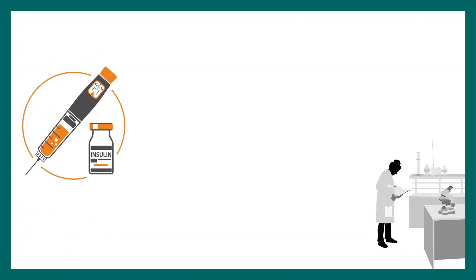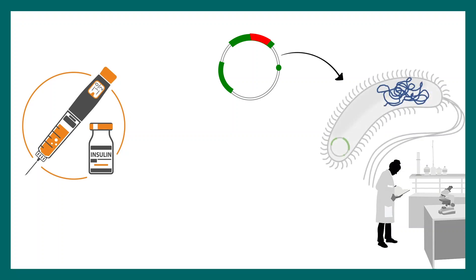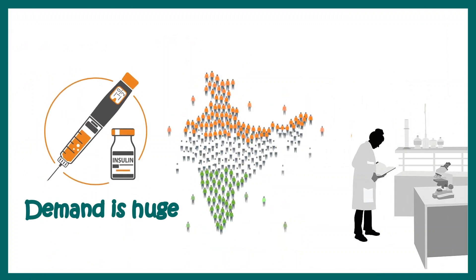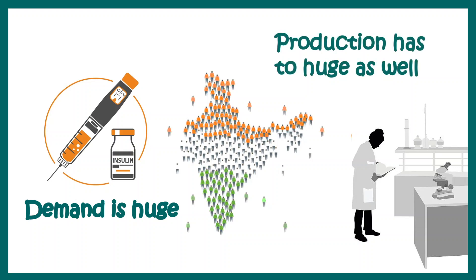In your lab, you can possibly produce insulin, and that insulin might be required for a person who is suffering from diabetes. In order to prepare insulin, you will clone the insulin gene in an expression vector, transfect that into a bacteria, and grow the bacteria. When the bacteria grows, you can extract insulin out of it. Theoretically, very simple and totally doable. But think about several thousand people in India who require insulin — the demand is huge, and it's not possible to create that quantity in the laboratory.